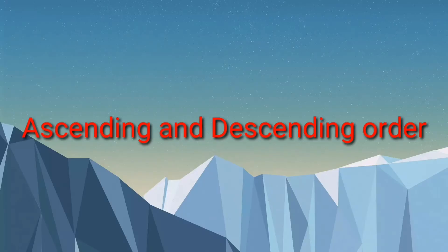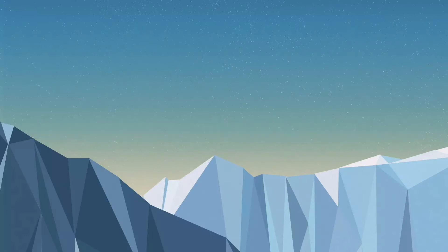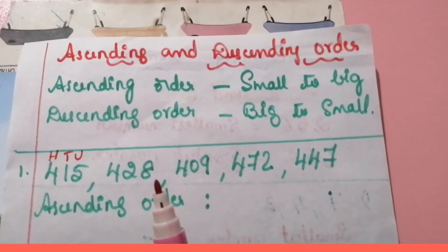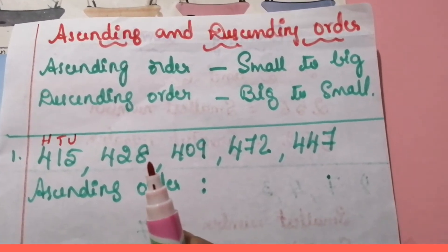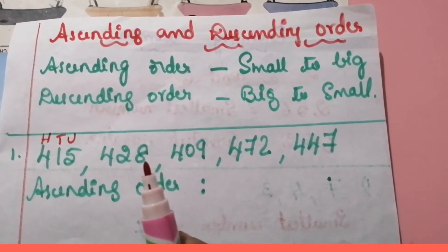Hello students. In the previous class you have learned how to write single digit and two digit numbers in the ascending and descending order. Now let us learn to write the three digit numbers in the ascending and descending order. Let us learn how to arrange the numbers in ascending and descending order.